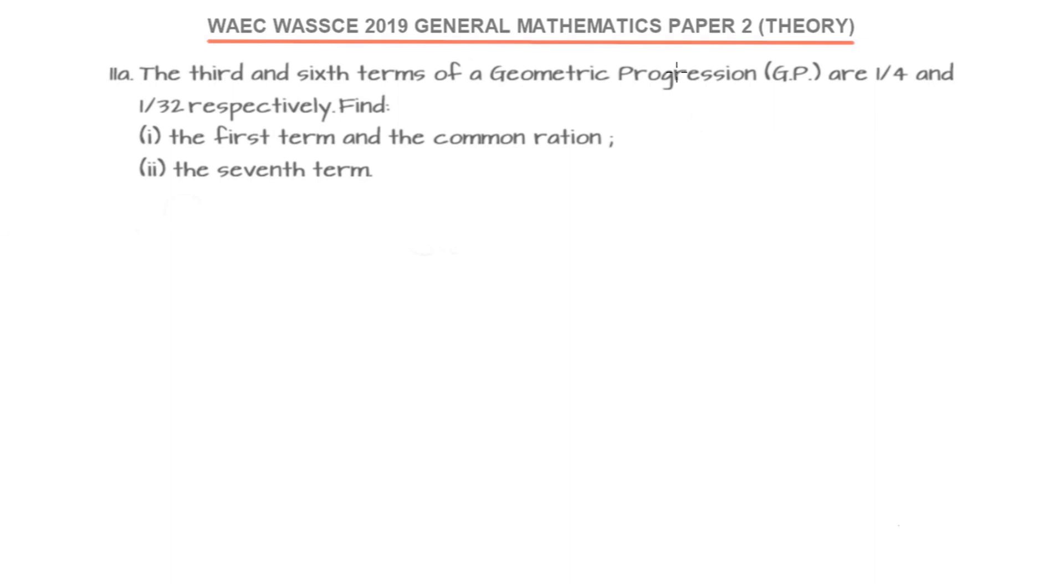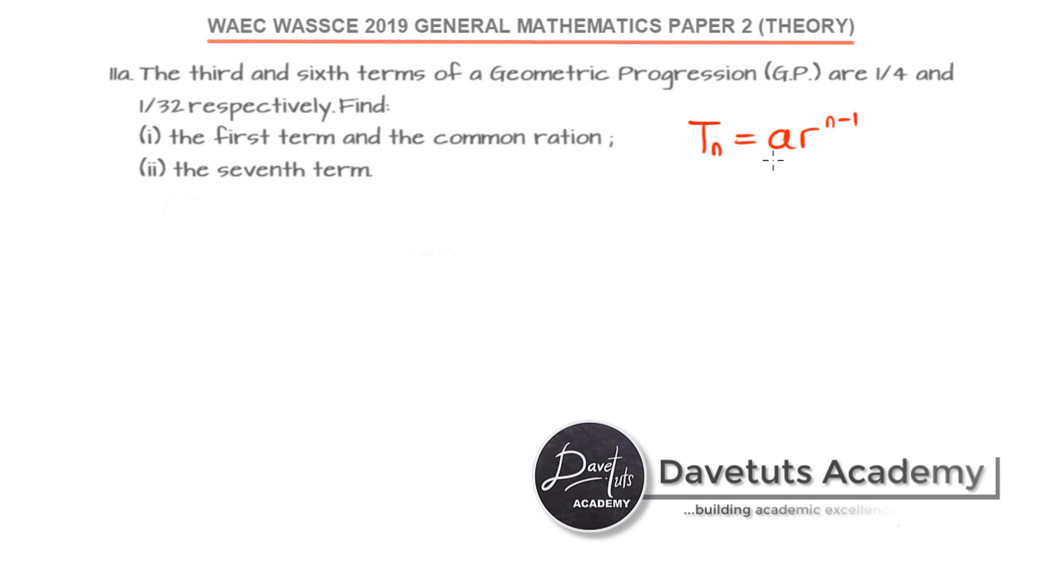For a GP, the nth term is generally given as T_n equals A times R raised to power n minus 1, where A is the first term and R is the common ratio of the geometric progression.